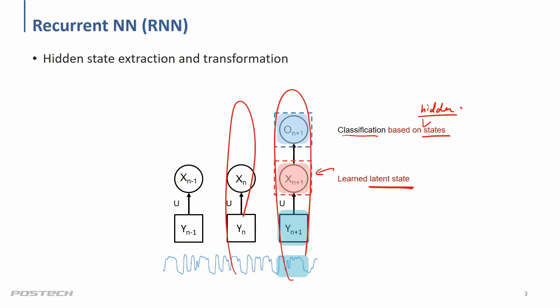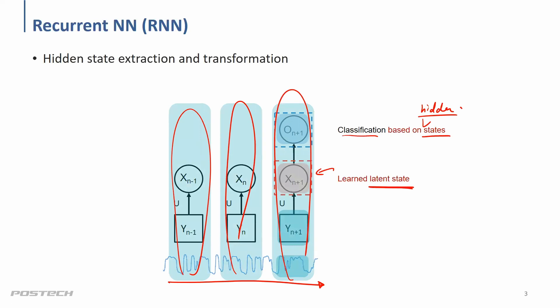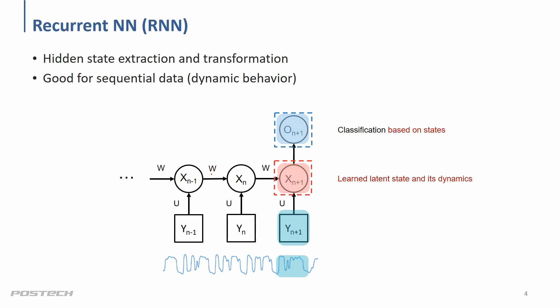In many cases in physical systems or dynamic systems, we do have some kind of sequence behaviors. We have some dynamics between the time sequence, so instead of no dynamics, we assume there is some kind of dynamics over the hidden state — not over the outputs, observations, or inputs. That gives us the final structure for the recurrent neural net.